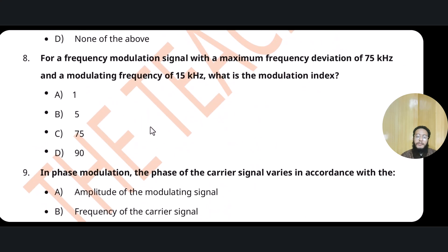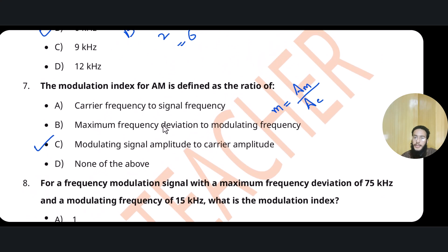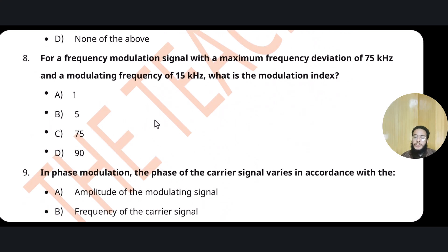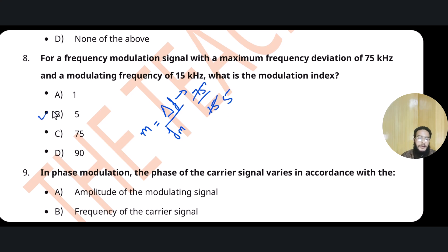Question 8: For a frequency modulation signal with a maximum frequency deviation of 75 kHz and a modulating frequency of 15 kHz, what is the modulation index? For FM, the modulation index is delta F divided by fm, so 75 ÷ 15 = 5. The result has no unit because it is a ratio of same quantities.